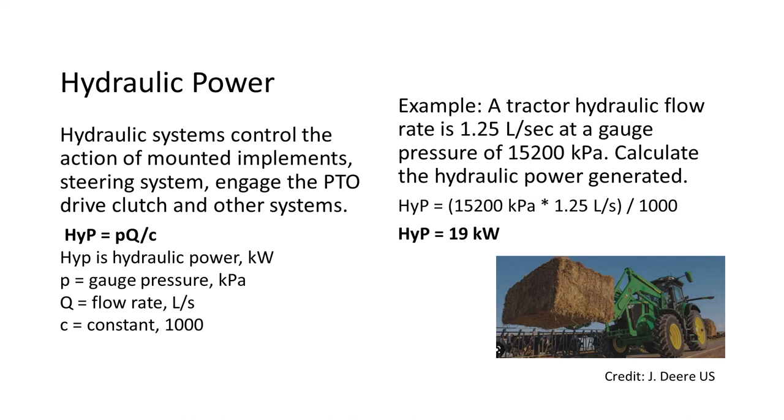Hydraulic systems are crucial components of modern tractors. They control the action of mounted tillage implements and the steering system, engage the PTO clutch, and power front end loaders and other systems. We can calculate the hydraulic power of a tractor with a hydraulic flow rate of 1.25 liters per second and a gauge pressure of 15,200 kilopascals as the product of those values divided by 1, giving a hydraulic power of 19 kW or 25.5 horsepower.